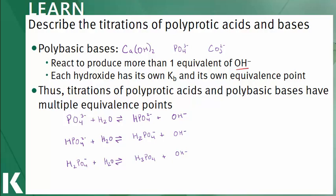Each reaction can be labeled Kb1, Kb2, Kb3, which means the titration curve would be similar to the polyprotic acid, but with the opposite trend, starting with a basic pH and ending at an acidic pH.